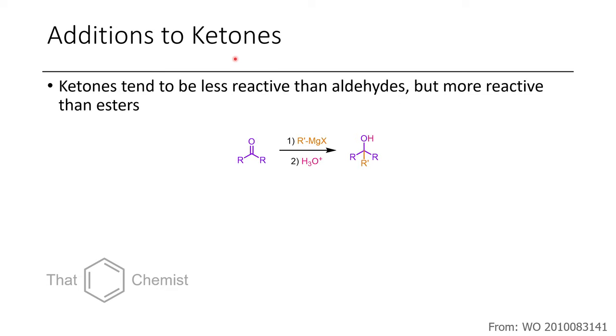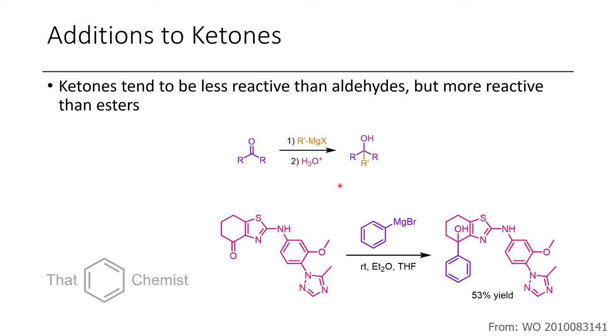We could also add these Grignard reagents to ketones. And so if we add a Grignard reagent to a ketone, we get a tertiary alcohol. One example I found from a patent was this complex ketone here, where this Grignard reagent adds and it tolerates all of these different heterocyclic moieties and some interesting functional groups in okay yield.